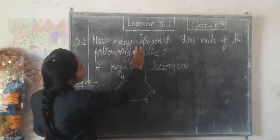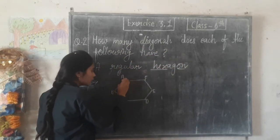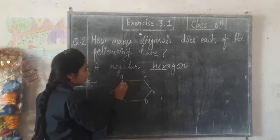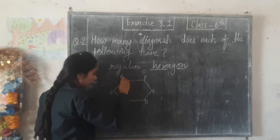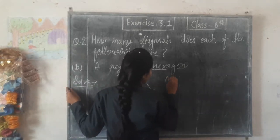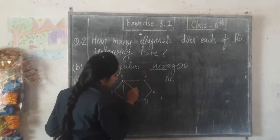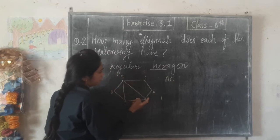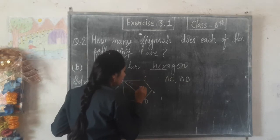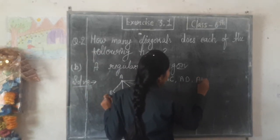How many diagonals does a hexagon have? Starting from vertex A — note the diagonals. First diagonal: A to C. Next, A to D. Then A to E. So diagonals from A are: AC, AD, and AE.